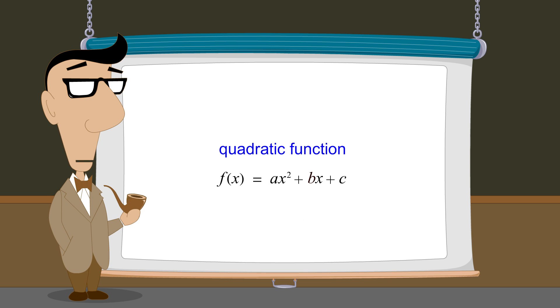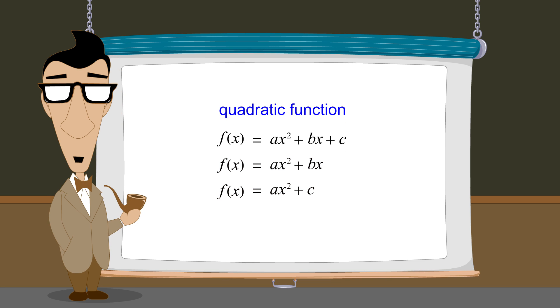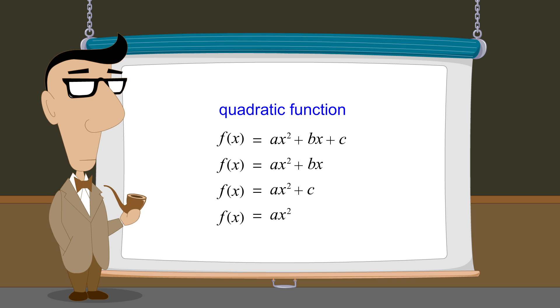Since either b or c or both can be zero, a quadratic function may consist of two terms or possibly just a single x-squared term. But since a cannot be zero, quadratic functions must always contain an x-squared term.